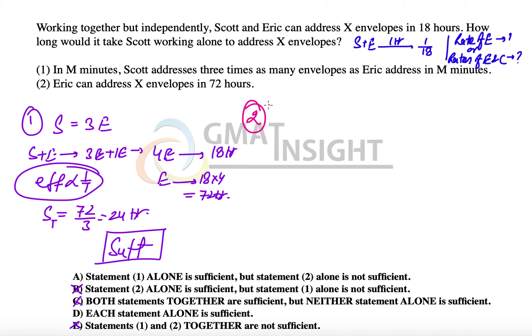The second statement says Eric can address x envelopes in 72 hours, so one hour's work of Eric is 1/72. Using these two pieces of information—the combined rate of Scott and Eric, and Eric's rate—we can find Scott's rate: 1/18 minus 1/72.